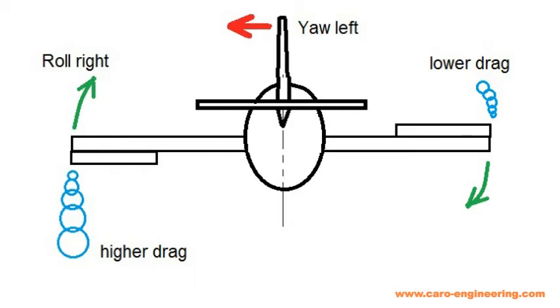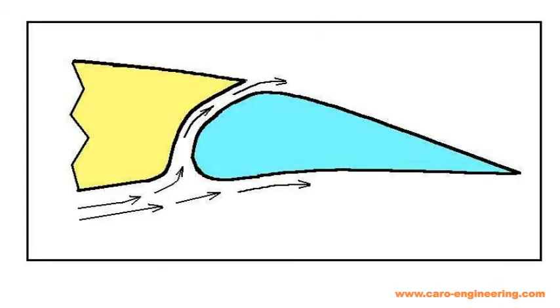Larger aileron deflections can be used if the aileron shape is a slotted design. Here the airflow can stay attached and help maintain roll control even if the wing in front of it has stalled.